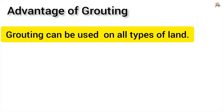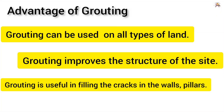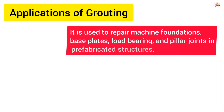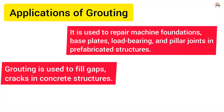Advantages of grouting: Grouting can be used on all types of land. Grouting improves the structure of the site. Grouting is useful in filling the cracks in walls and pillars. Applications of grouting: Grouting is used to repair machine foundations, base plates, load bearing, and pillar joints in prefabricated structures. Grouting is used to fill gaps and cracks in concrete structures.